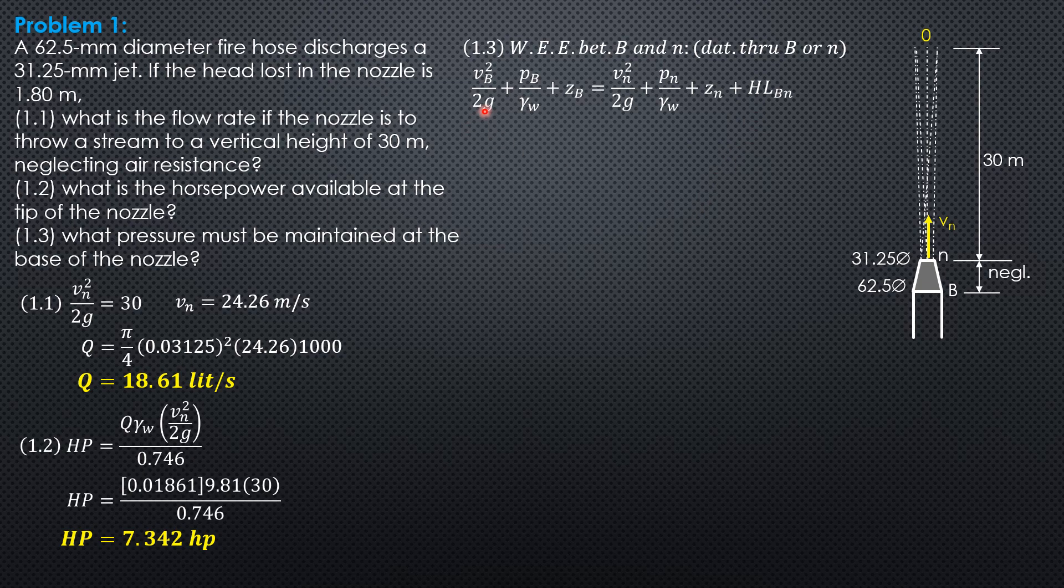V sub B can be computed by continuity equation. We do not consider pi over 4 anymore, it will be cancelled. 62.5 squared times V sub B equals 31.25 squared times 24.26.